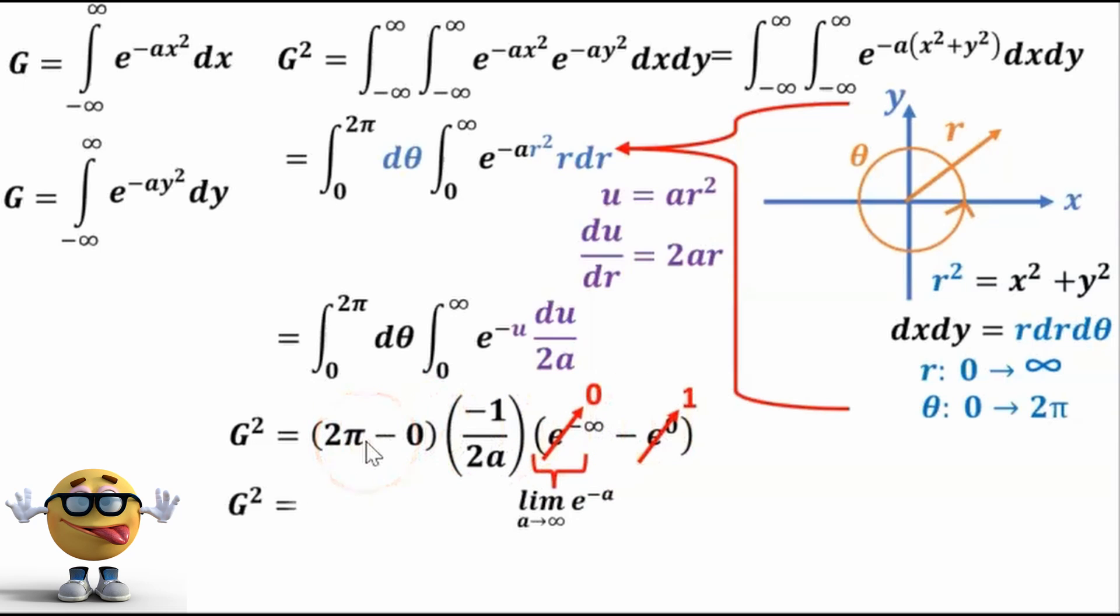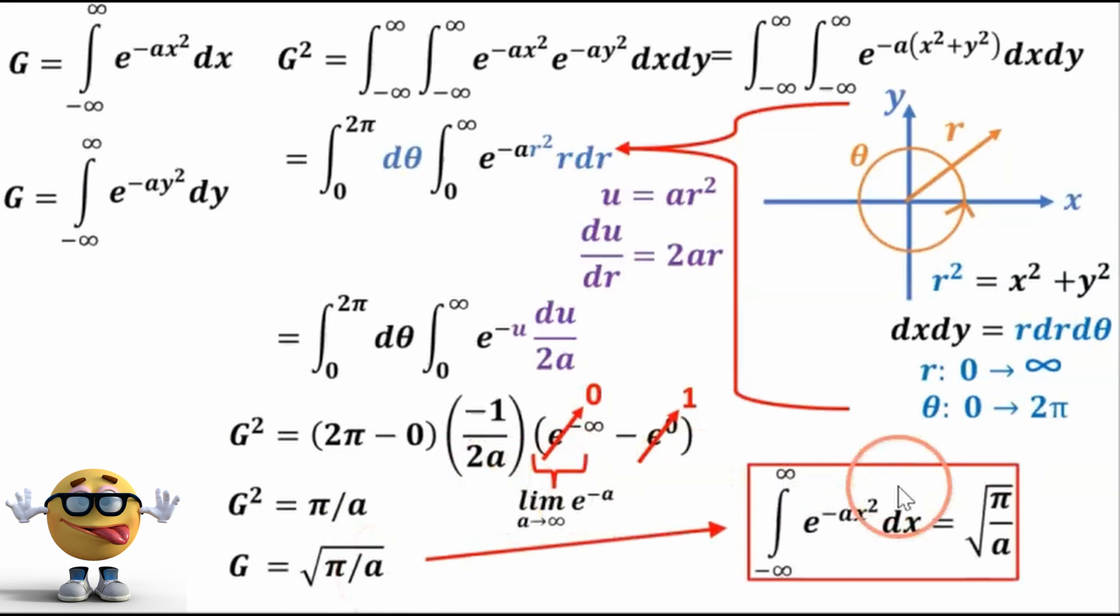And if we simplify this, then g squared is pi over a. Of course, we don't care about g squared. We want g. So we'll take the square root of that. So root pi over a, which is our integral right here that we're looking for. So the integral of e to the negative ax squared from negative infinity to infinity is the square root of pi over a.